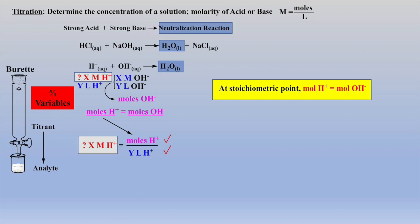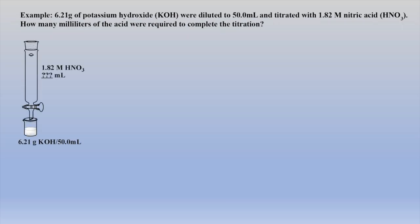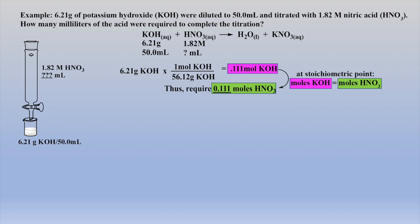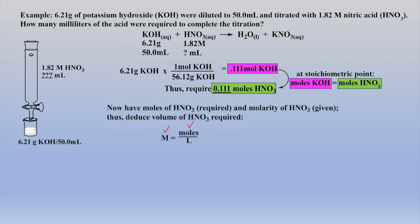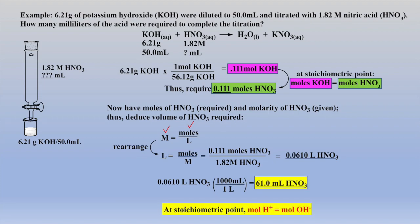Let's work several examples to demonstrate these principles. In this example problem, we are given grams of potassium hydroxide diluted to 50 milliliters, being titrated with 1.82 molar nitric acid, and we are asked how many milliliters of acid are required to completely neutralize the basic solution. Converting grams KOH to moles KOH allows one to deduce moles nitric acid required for this neutralization, which is the same value due to the one-to-one stoichiometry. We now know moles and molarity of nitric acid, so we rearrange the molarity relationship and solve for volume of nitric acid required in liters, followed by conversion to milliliters. The key to these calculations is the stoichiometric relationship between acid and base at the equivalence point.